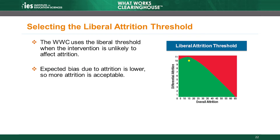When does the WWC choose the liberal threshold? WWC review teams choose the liberal threshold when they believe that the types of interventions studied are unlikely to affect attrition. For example, the beginning reading topic area uses the liberal attrition threshold since, for students in early elementary grades, attrition is likely to result from things like students being absent on the day of testing or families moving between schools or districts. It's unlikely that a reading intervention will directly affect the probability that students will leave a study — families are not likely to move because their child's school is using a certain reading instructional strategy. The expected bias due to attrition is lower in situations like this, so more attrition is acceptable.